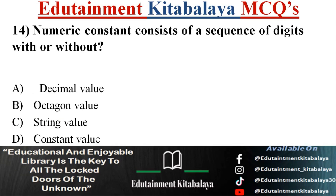Question number 14. Numeric constant consists of a sequence of digits with or without? A. Decimal value. B. Octagon value. C. String value. D. Constant value. Correct answer is A. Decimal value.